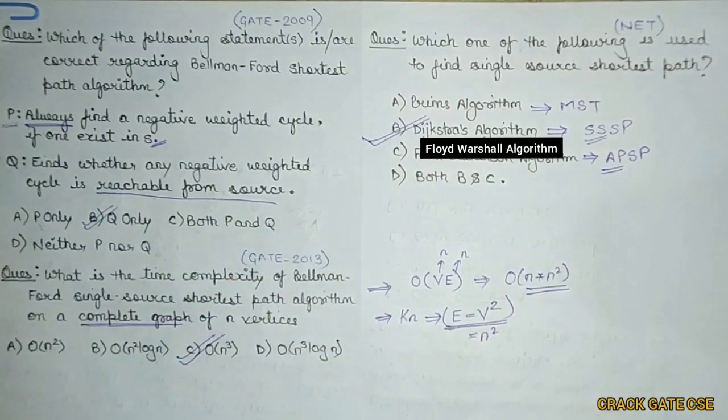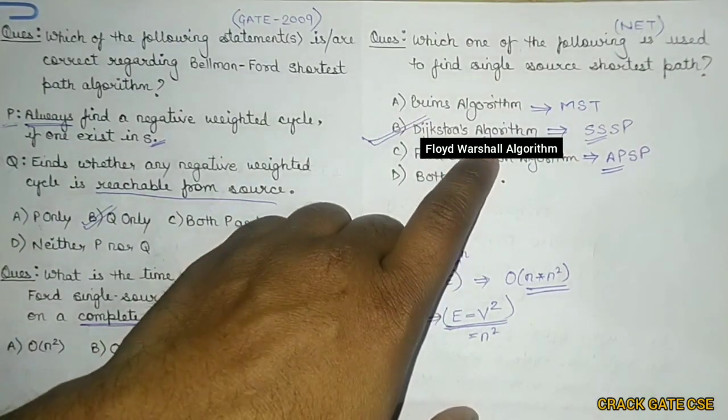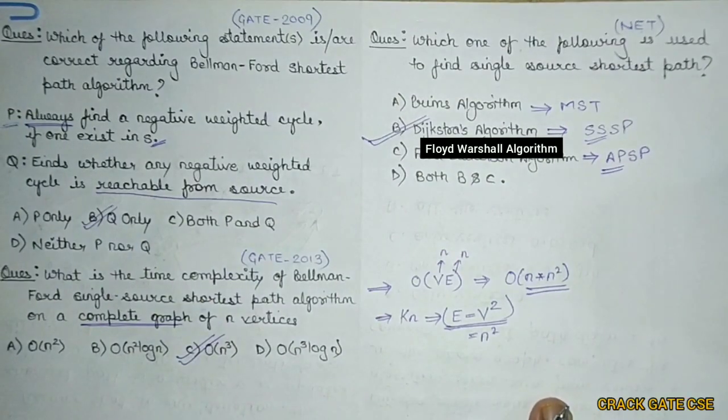But in case, if in this particular question, anywhere Bellman-Ford is given, then Dijkstra algorithm and Bellman-Ford algorithm both will be answers. So remember these things, the Dijkstra and Bellman-Ford algorithm are for the single source shortest path.